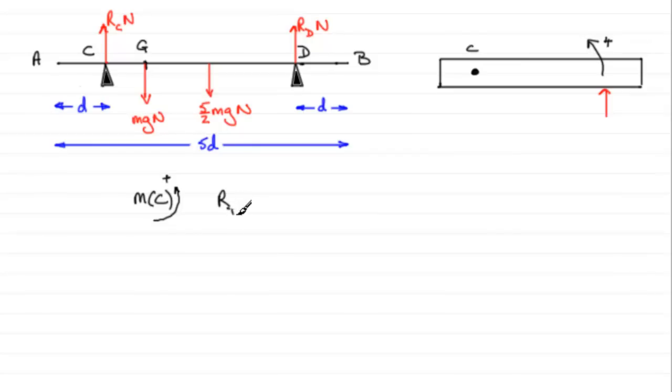So when it comes to this moment for RD, it's going to be the force RD multiplied by the distance from D to C. Now we know that we're coming in D here. We've got D in from this end, so that leaves us with 3D.